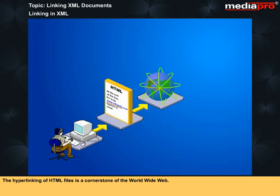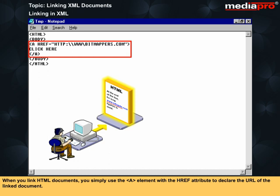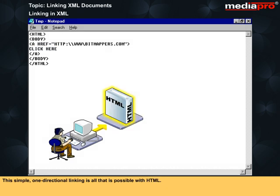The hyperlinking of HTML files is a cornerstone of the World Wide Web. Without the ability to link documents, it would be impossible to even use the word 'web' because each document would exist without some kind of connection to other documents. When you link HTML documents, you simply use the A element with the href attribute to declare the URL of the linked document. The text or image between the A and slash A tags becomes a clickable page element, and when a user clicks on one of these elements, the browser loads the document at the URL specified by the href attribute. This simple one-directional linking is all that is possible with HTML.